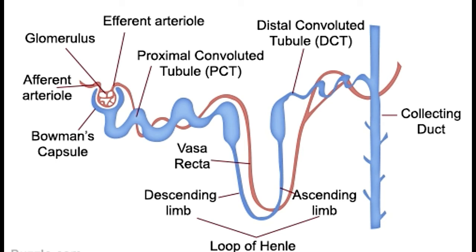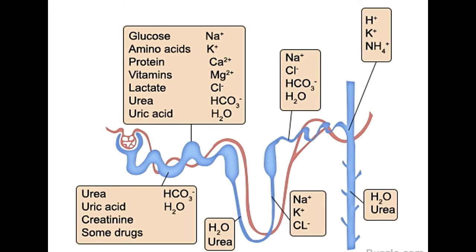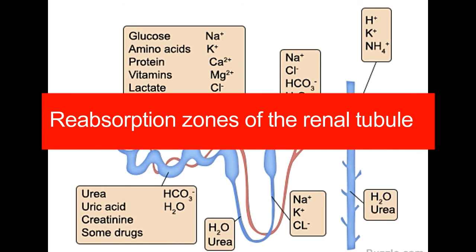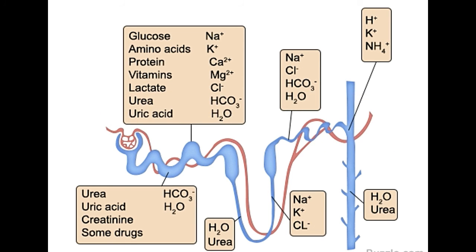The renal tubule is responsible for the reabsorption of glucose, salts, and some water. As the name indicates, the renal tubule is shaped like a tube. The regions where specific substances are reabsorbed are given in the diagram below. The two convoluted tubules are so named due to their tangled, convoluted nature. The 'proximal' and 'distal' parts signify the relative distance of each from the renal corpuscle.